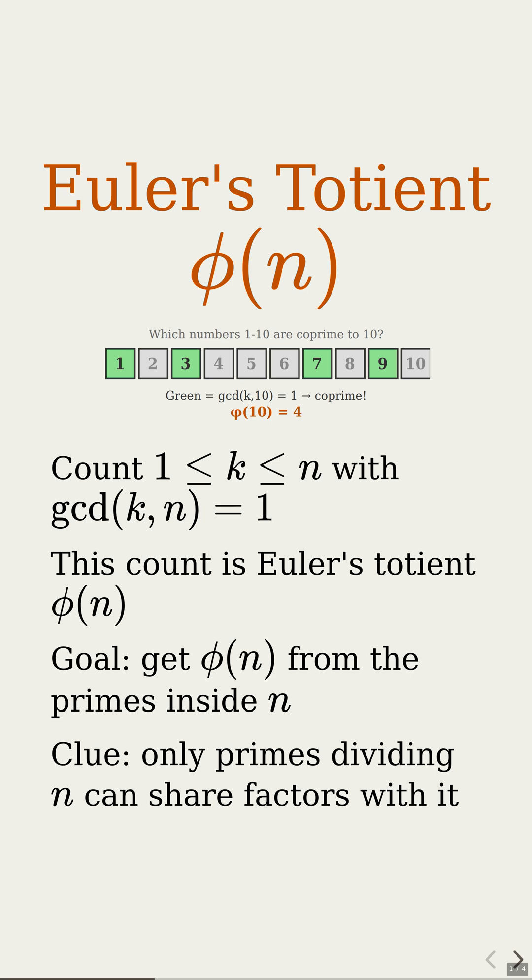Yes, because the only way a number fails to be co-prime to n is if it shares one of those prime factors that divide n.